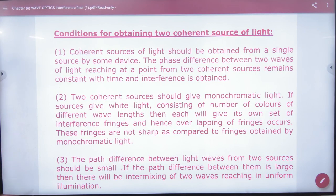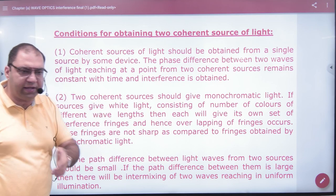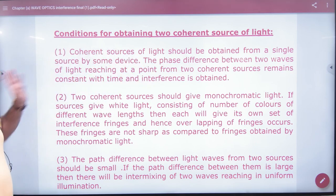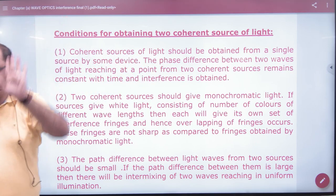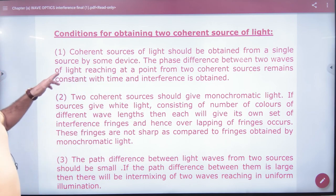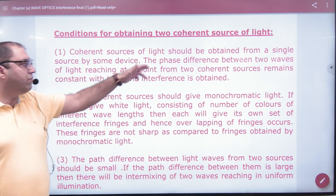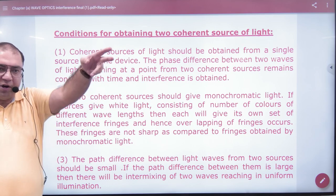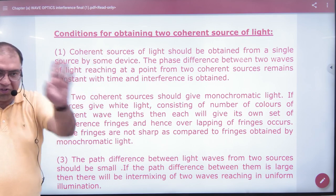Conditions for obtaining two coherent sources of light. Coherent source of light should be obtained from a single source by some device, like in YDSE with two slits. Phase difference between two waves of light reaching at a point from two coherent sources remains constant. The phase difference at one point should be constant.